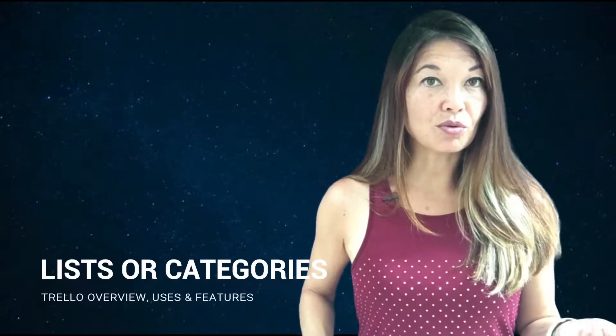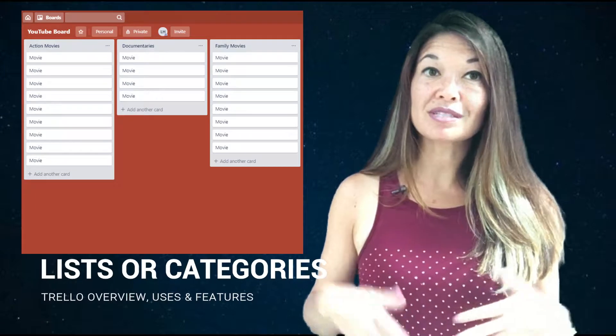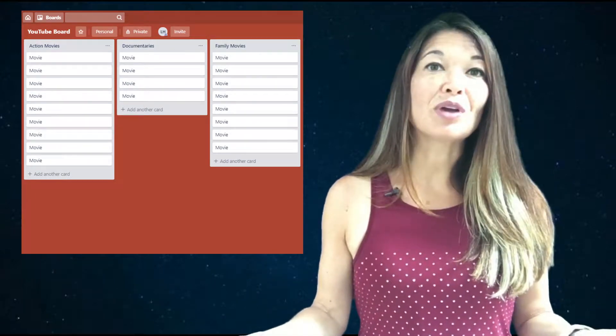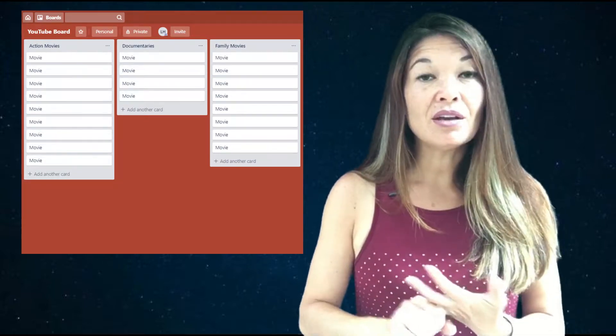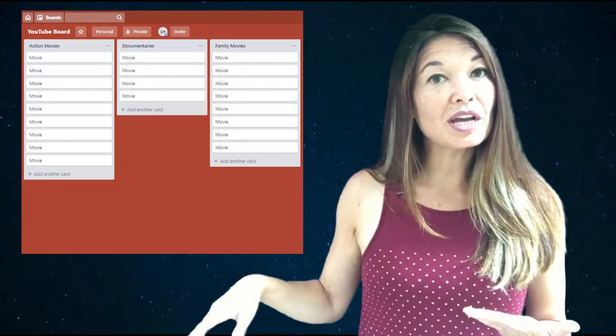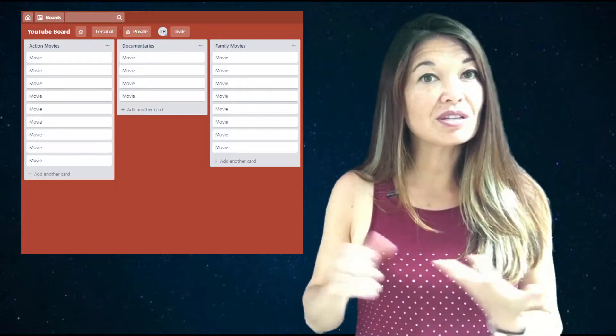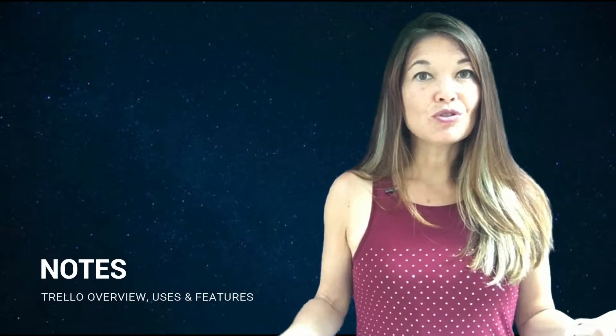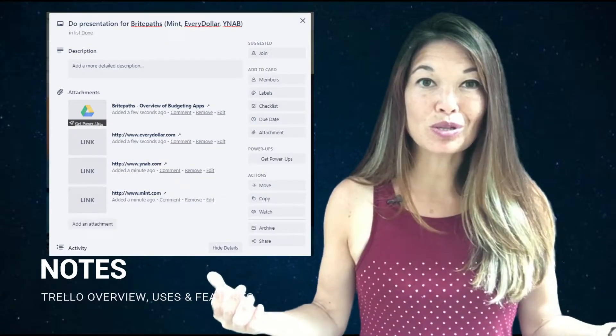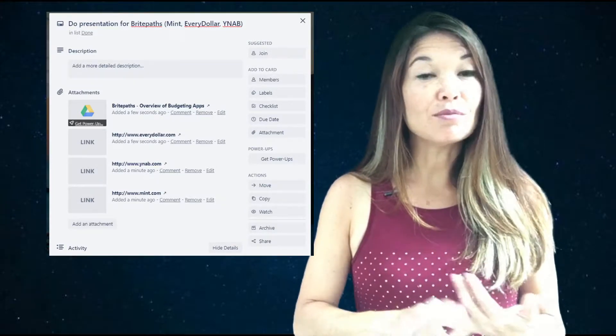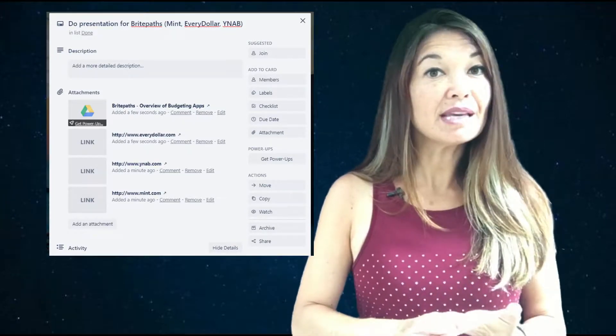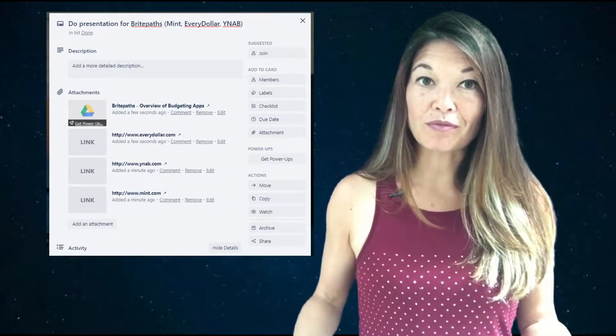So the next way that people use Trello is by creating lists or categories. So each list on a board contains a certain type of thing. People use Trello to hold all kinds of lists, including grocery lists, names of movies they want to see, all the tasks in a bigger project, places you want to see on vacation, etc. And finally, people use Trello just to hold notes. So Trello cards can contain so much information that you can easily just use them as a repository for notes. You can put attachments, checklists, images, links, and comments in a card and then store that for future reference.